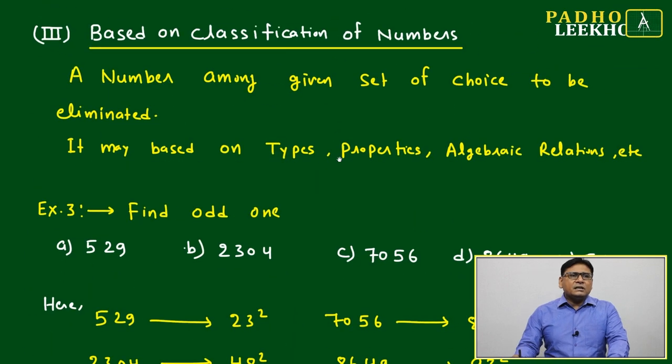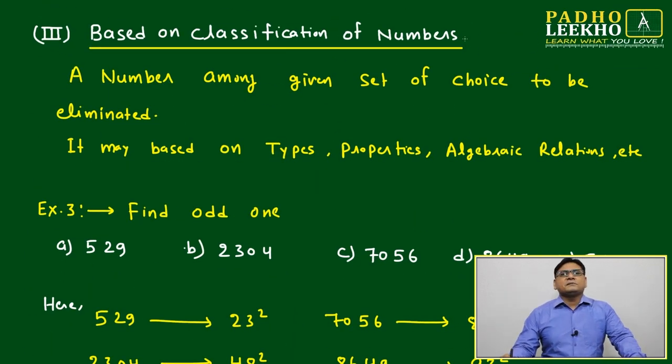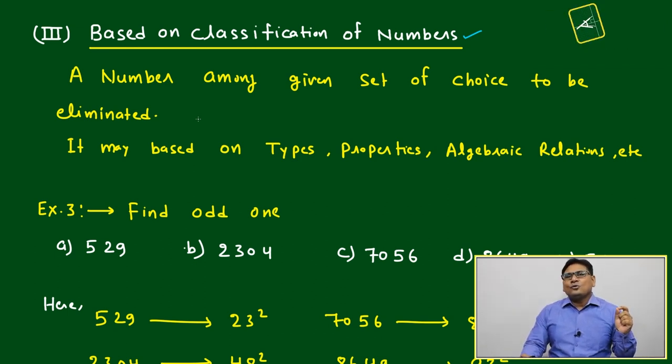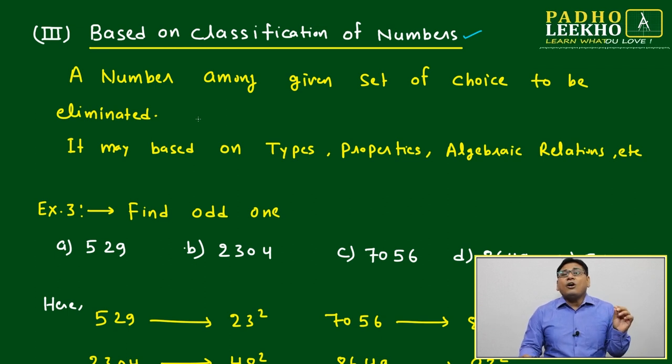Welcome to the third level of classification, that is classification of numbers. A number among a given set of choices to be eliminated. Again here, simple thing, but you must know the number system very properly, means all types of properties of numbers.